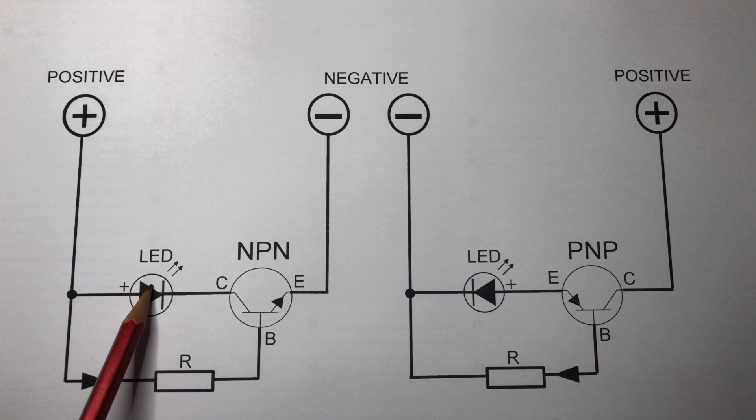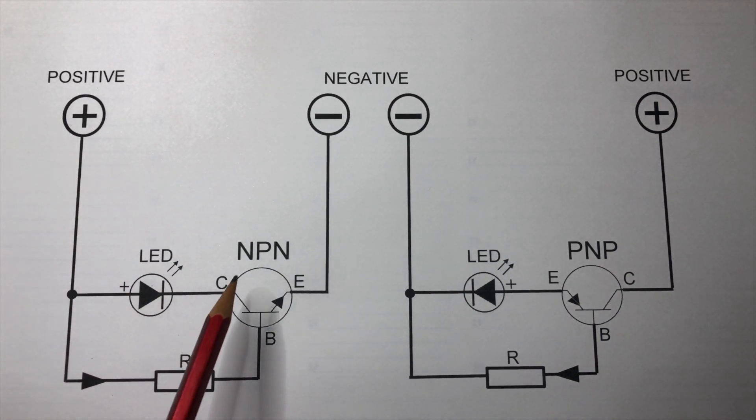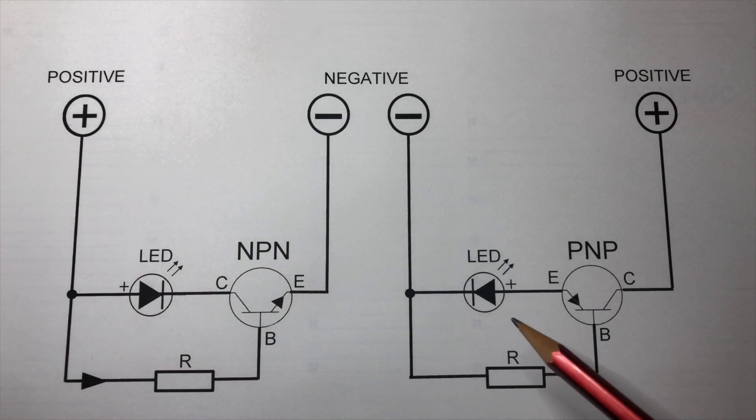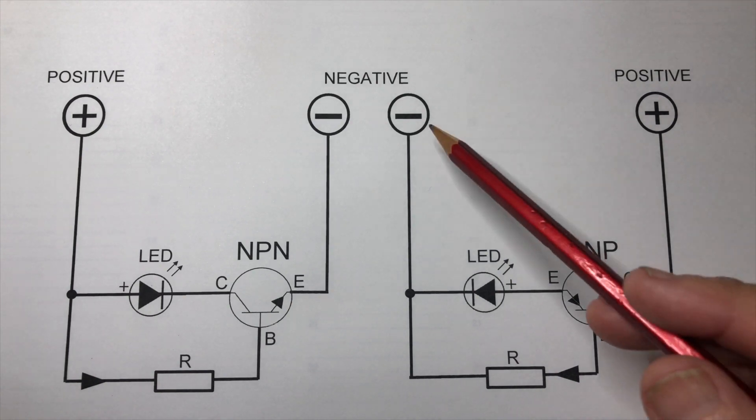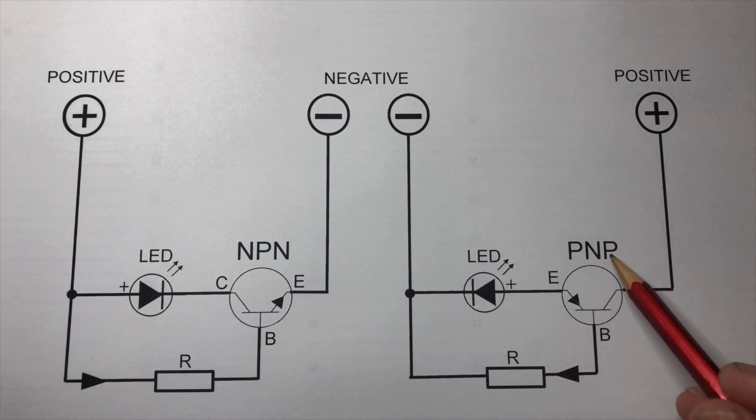When the load, which here is the LED, is connected to the positive side, we use an NPN transistor. When the load is connected to the negative, we use a PNP transistor.